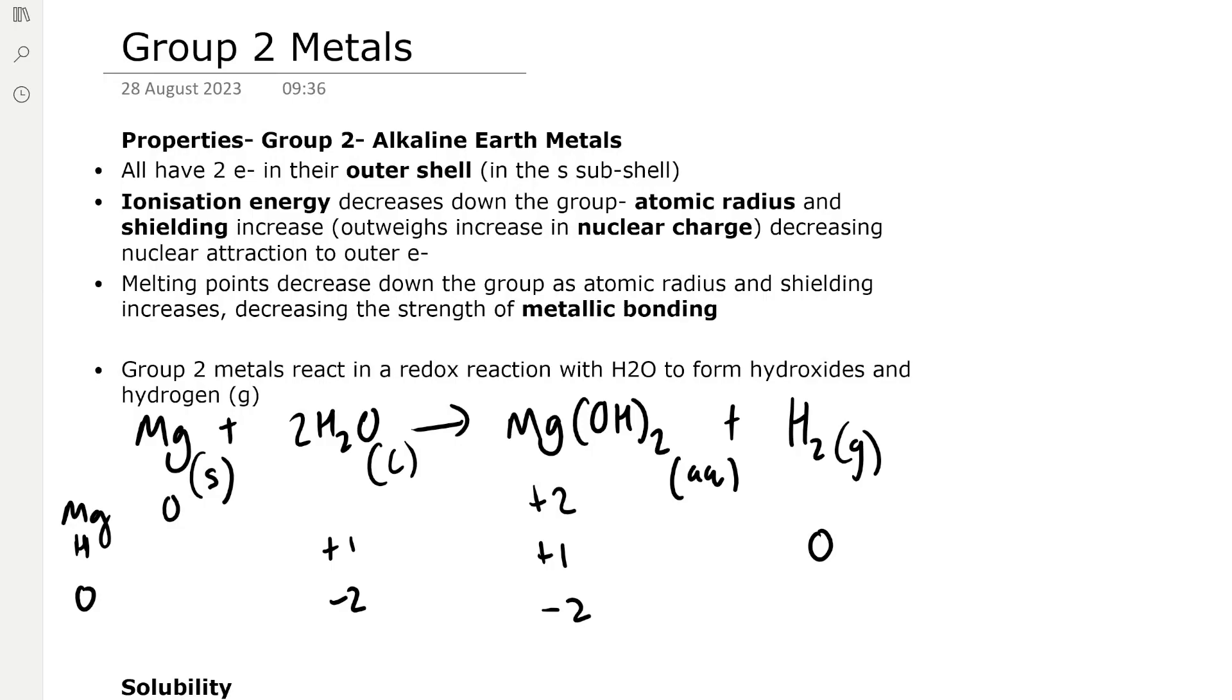The ionization energy of group 2 metals decreases down the group because atomic radius and shielding increase, which outweighs the increase in nuclear charge, decreasing the nuclear attraction to the outer electrons.